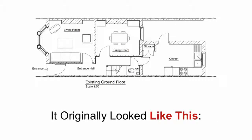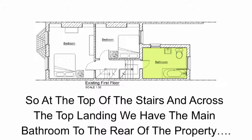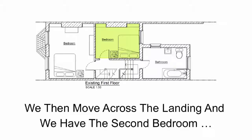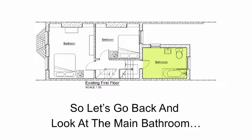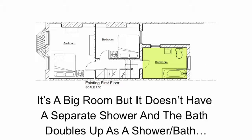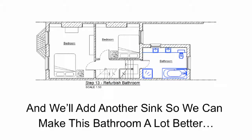Now we can turn our attention upstairs to the first floor. At the top of the stairs and across the top landing we have the main bathroom to the rear of the property, then the second bedroom looking out onto the rear garden, and finally the master bedroom at the end of the landing. Looking at the main bathroom — it's a big room but it doesn't have a separate shower; the bath doubles up as a shower bath. So in step 13 we will refurbish the bathroom, put in a shower unit, and add another sink to make this bathroom a lot more functional and a nicer place to be in.